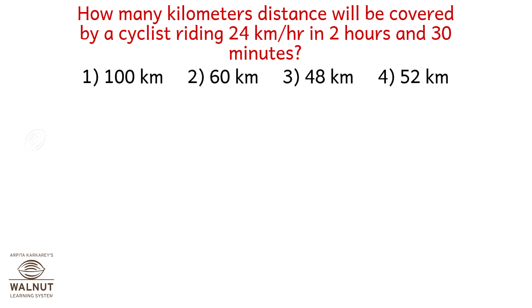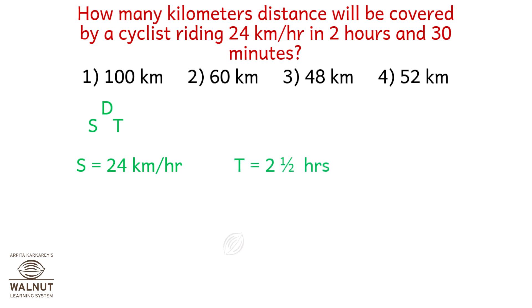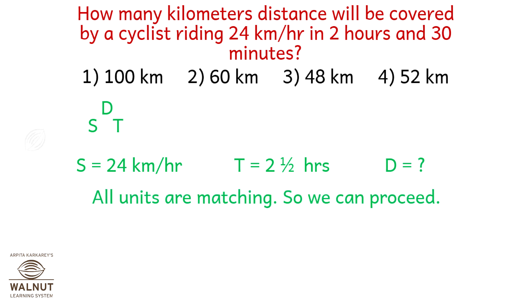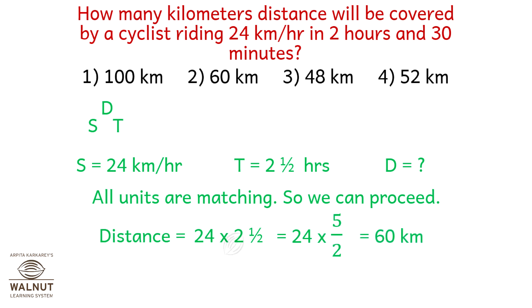How many kilometers will be covered by a cyclist riding 24 kilometers per hour in 2 hours and 30 minutes? Speed is equal to distance upon time. The speed is 24 kilometers per hour and the time is 2 and a half hours. All units are matching, so distance is 24 into 5 upon 2, which equals 60 kilometers — option number 2.